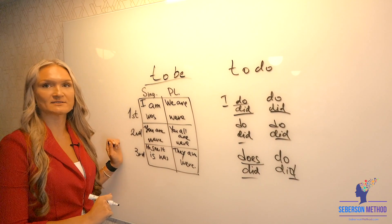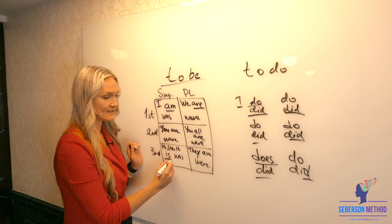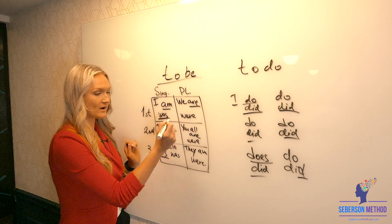Pay attention to what happens to the to be verb. I am, you are, he, she, it is. And in the past tense it's either was or were.